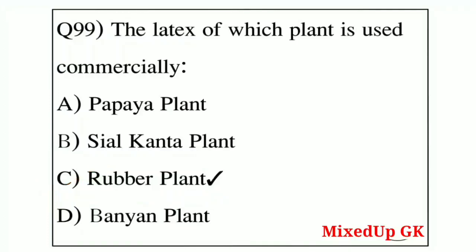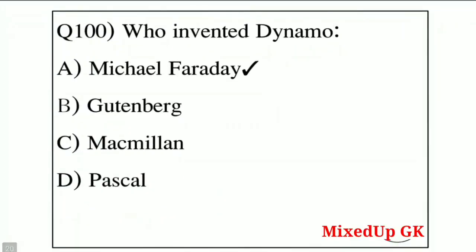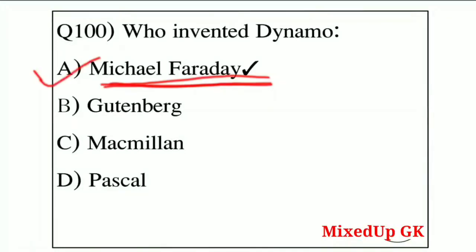Question number 100, the last question of this video: who invented the dynamo? Option A: Michael Faraday, Option B: Gutenberg, Option C: Macmillan, Option D: Pascal. The correct answer is Option A — Michael Faraday invented the dynamo. This is an important question.